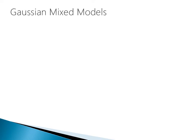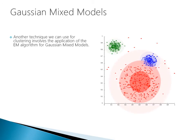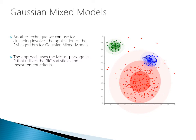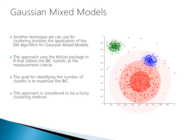I'd like to talk about another clustering approach — a different technique using the EM algorithm for Gaussian mixed models. This approach uses the MCLUST package in R and utilizes the BIC statistic as the measurement criteria. The goal is to maximize the BIC. This approach is considered a fuzzy clustering method — the previous techniques had firm cut-offs for where points fall within one cluster, but this is a different class. Much like an electron orbiting the nucleus of an atom, we have fuzzy shells: the further out you get, the less likelihood an item is falling within a particular cluster.